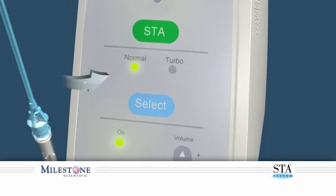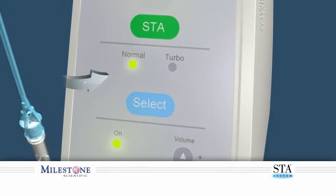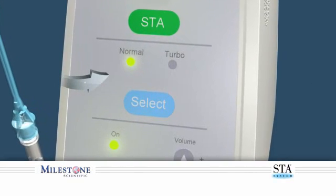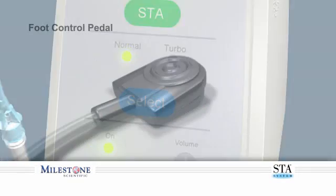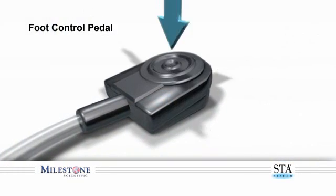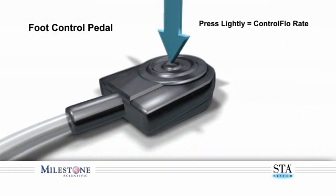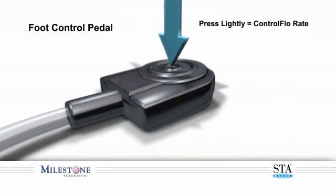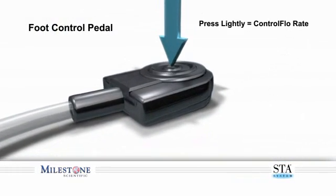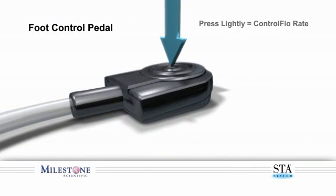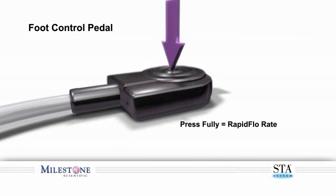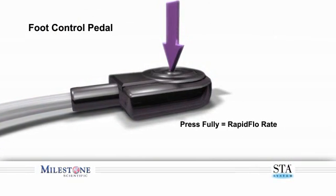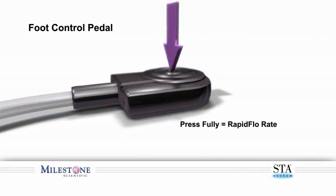In the normal mode, the foot control has two distinct positions. Depressing the foot control lightly allows you to enter the control flow rate. Fully depressing the foot control allows you to enter the rapid flow rate.